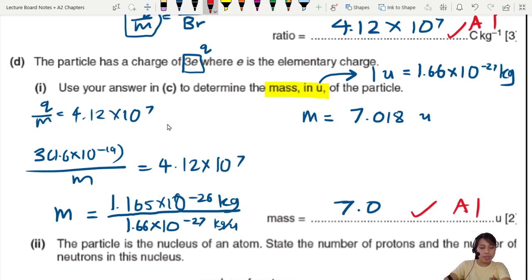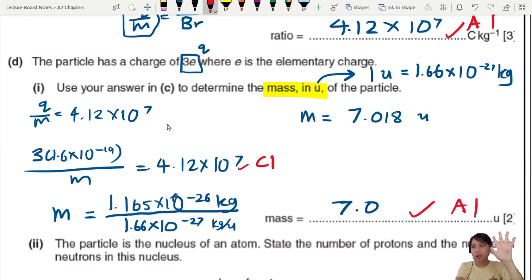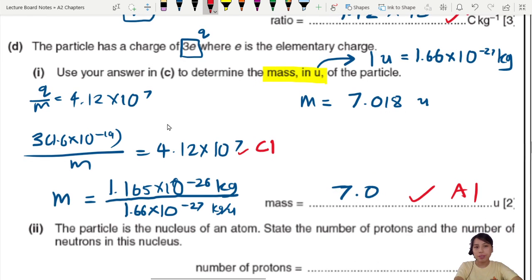We divide this by 1.66 times 10^-27 kg for each u. What would you get? If I press my calculator, I should get an M of 7.018 in units of u, atomic mass units AMU. So this one would be 7.0u. This was tricky, almost didn't see that. One for final answer, one for subbing into the correct equation. Be very careful of your units.